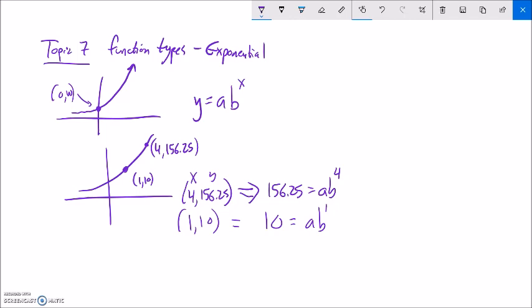And now what I'm going to do with these is I'm going to do some division. I can divide this by this. So if I go, notice if I go 156.25 divided by 10, that should be the same as if I go a times b to the fourth divided by a times b to the first. Because this is equal to that. And this thing is equal to that.